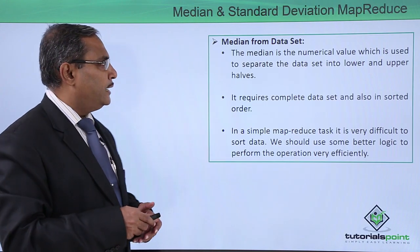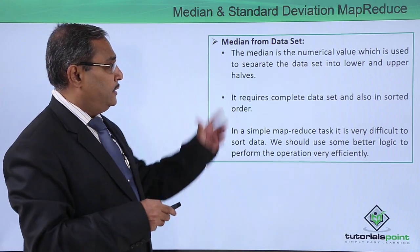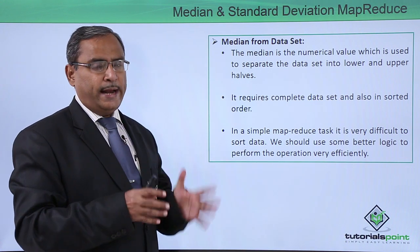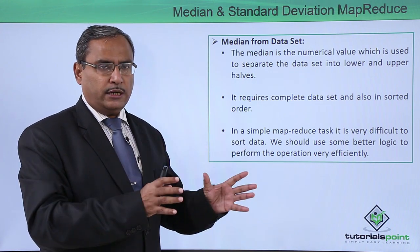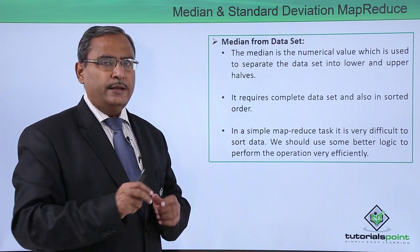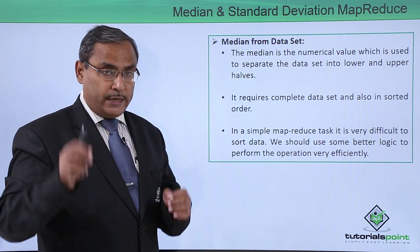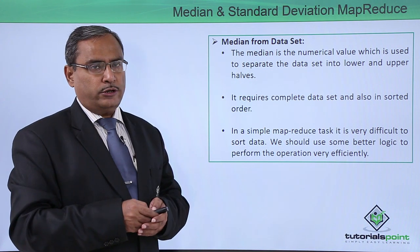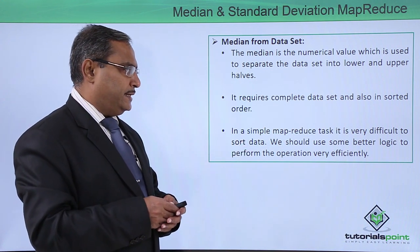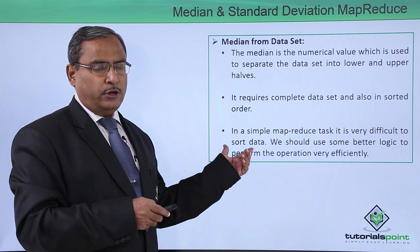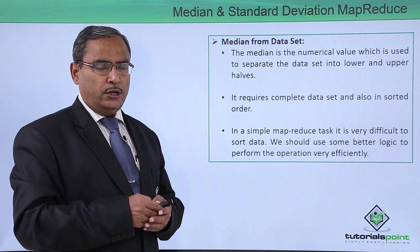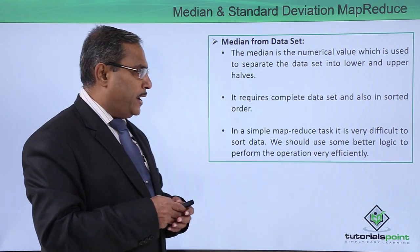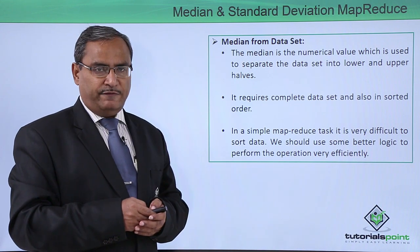We are starting with the median from the data set. The median is the numerical value which is used to separate the data set into lower and upper half — lower half means all the data which will be lesser than the median, and upper half means all the data values which will be higher than the median value. It requires a complete data set and also in sorted order. In a simple MapReduce task, it is very difficult to sort data because here we are dealing with a huge amount of data, so sorting will be a very difficult task. We should use some better logic to perform the operation very efficiently.